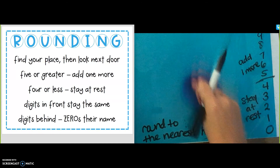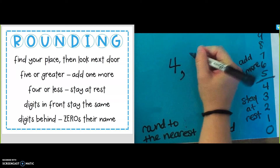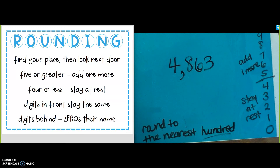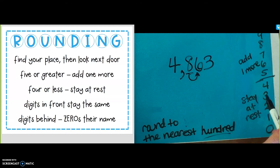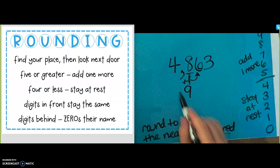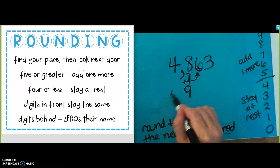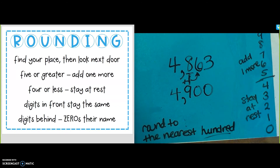Let's try another one. Round this number to the nearest 100. The number is 4,863. Same deal. Find your place — my place is the hundreds place. Look next door. 5 or greater, add one more. 4 or less, stay at rest. This number next door is 5 or greater, so I'm going to add one more to the 8 and make it a 9. I'm going to have the digit in front stay the same, which is a 4. And then the numbers behind — 0 is their name. So 4,863 rounded to the nearest 100 is 4,900.